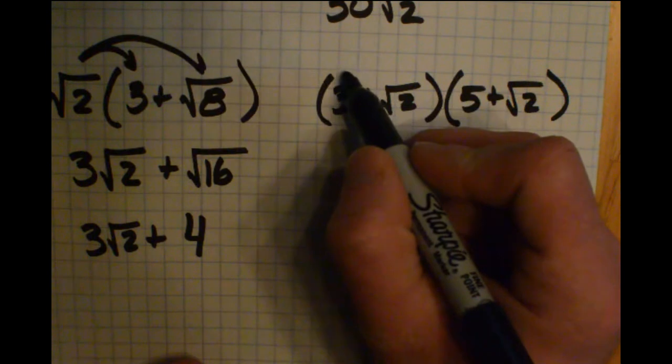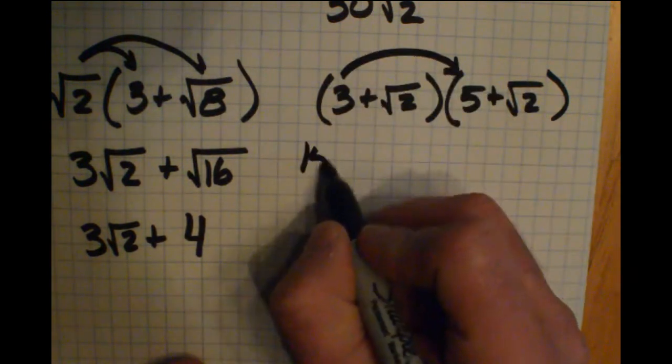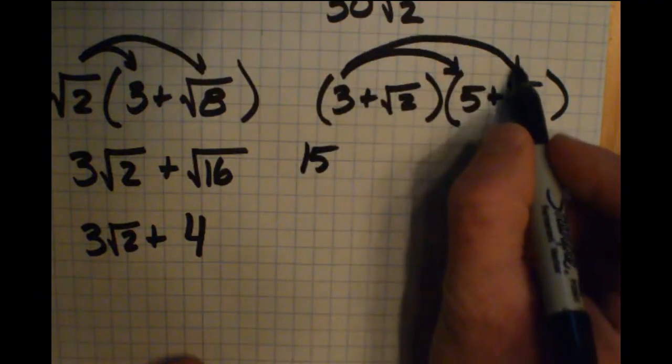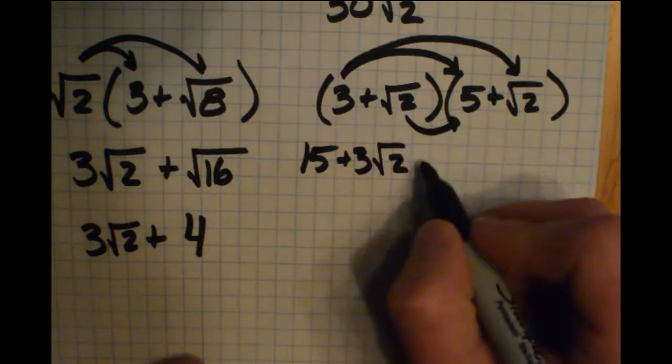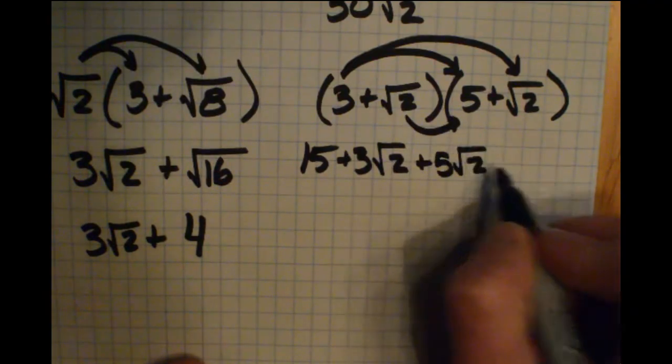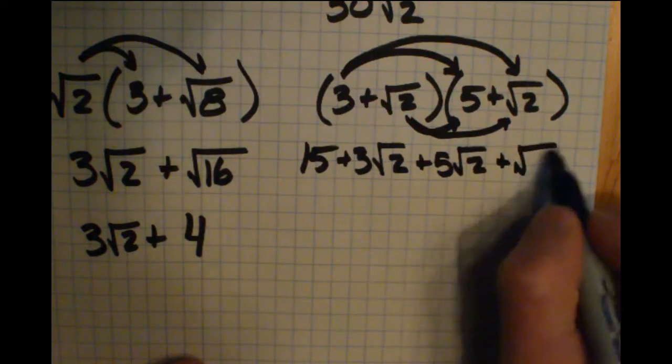I'm going to use distribution. I'll take that 3 and distribute it. 3 times 5 is 15. 3 times square root of 2 is plus 3 square root of 2. Square root of 2 times 5 is plus 5 square root of 2. Square root of 2 times square root of 2 is plus square root of 4.